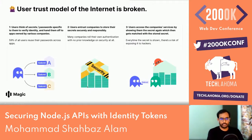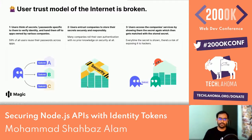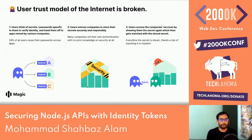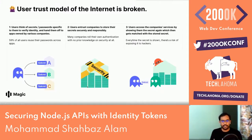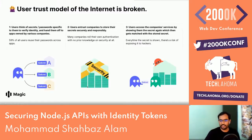First, let's understand how the user trust model of the internet is broken. Users think of passwords or secrets specific to them to verify identity, and usually hand them off to apps owned by various companies. Users trust companies to store their secrets properly and securely. But many companies don't have authentication expertise or a security team.